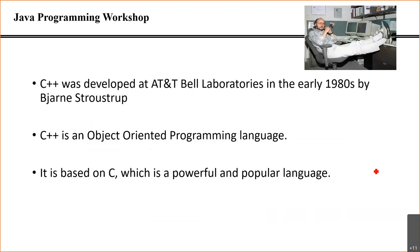In the early 1980s, Bjarne Stroustrup took C, modified it, and used object-oriented concepts from other languages and implemented them with C. He first called it 'C with classes,' and then later renamed it C++ — the ++ being the increment operator, meaning an extension. C++ was released in the 80s and slowly took off.